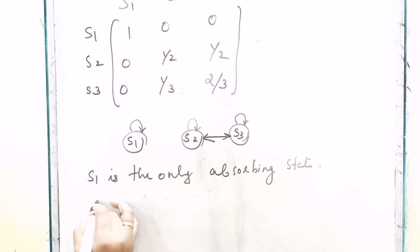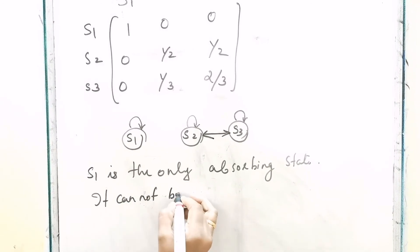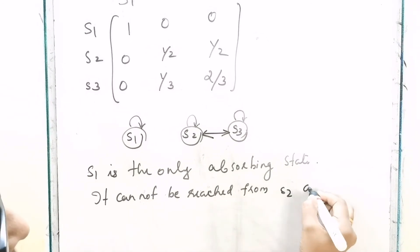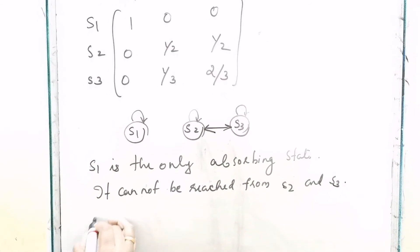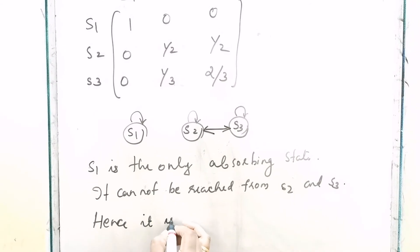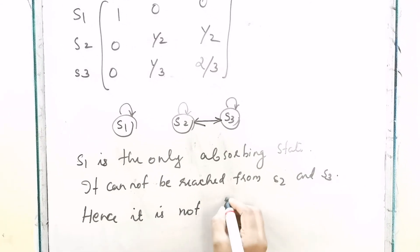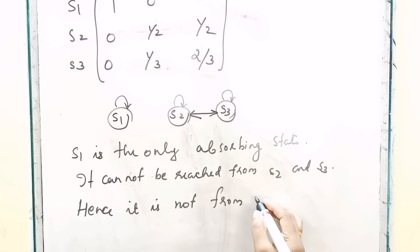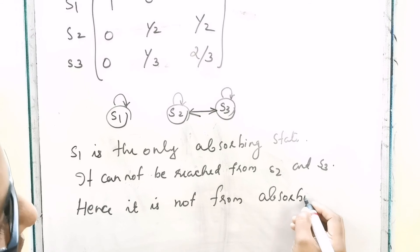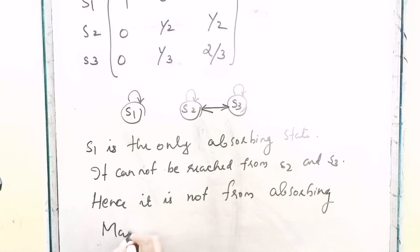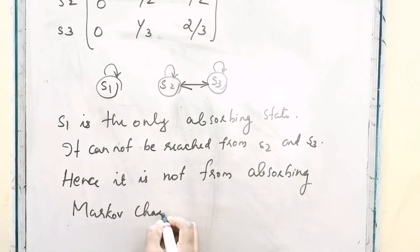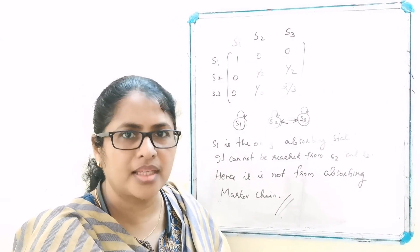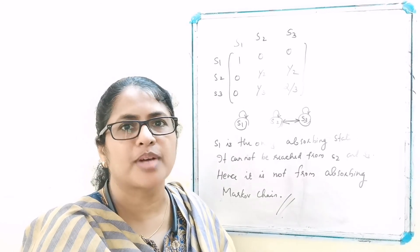Hence this matrix is not from an absorbing Markov chain. We have done three problems. I think you could understand the concept of absorbing Markov chain. Thank you.